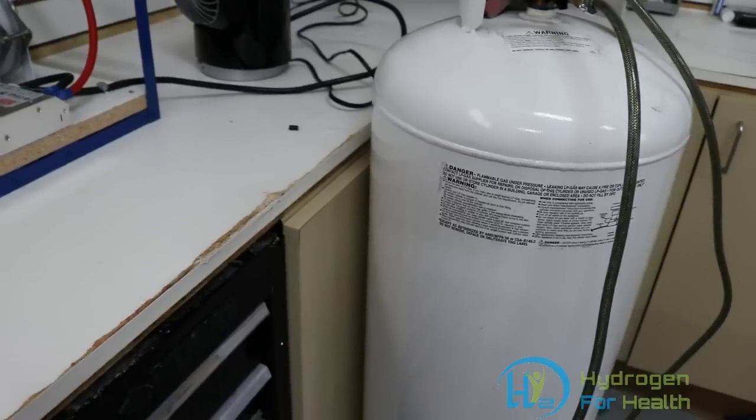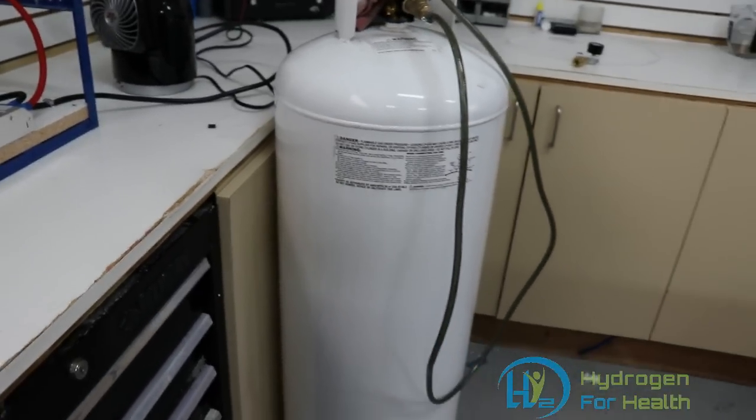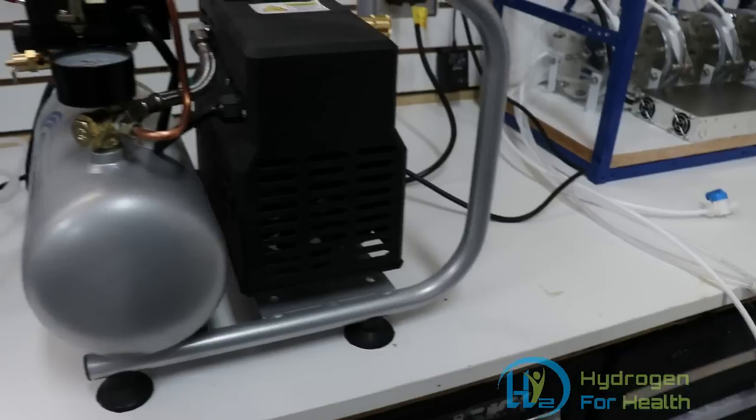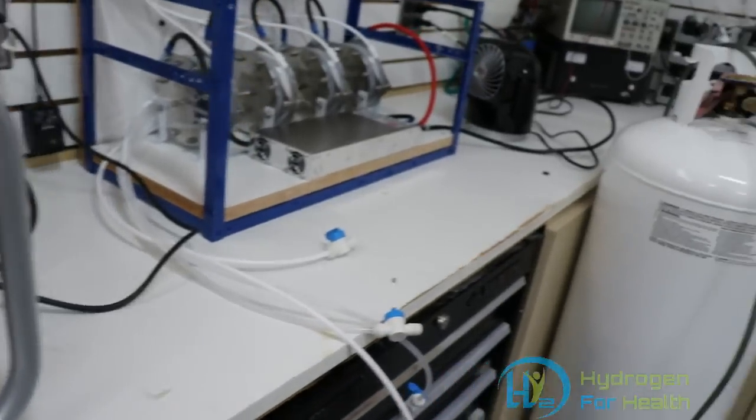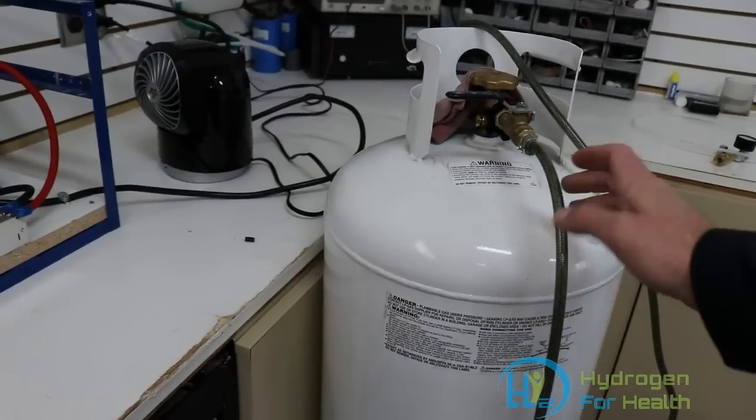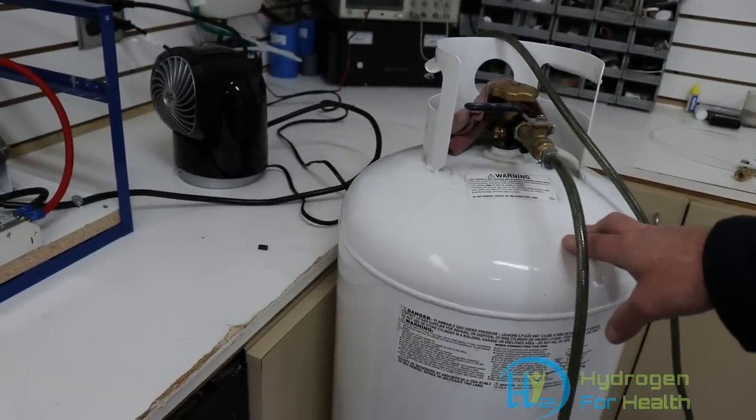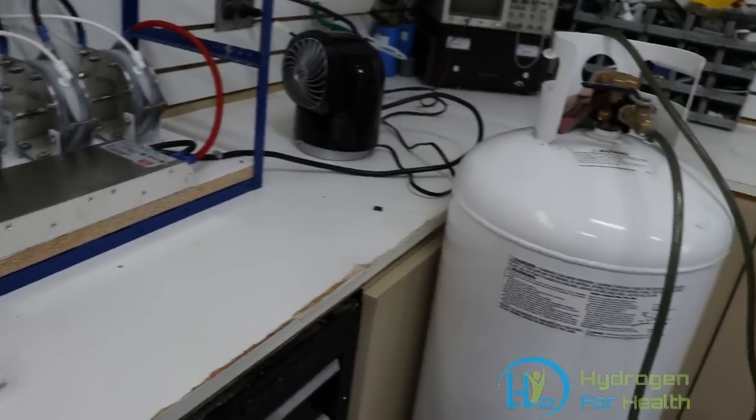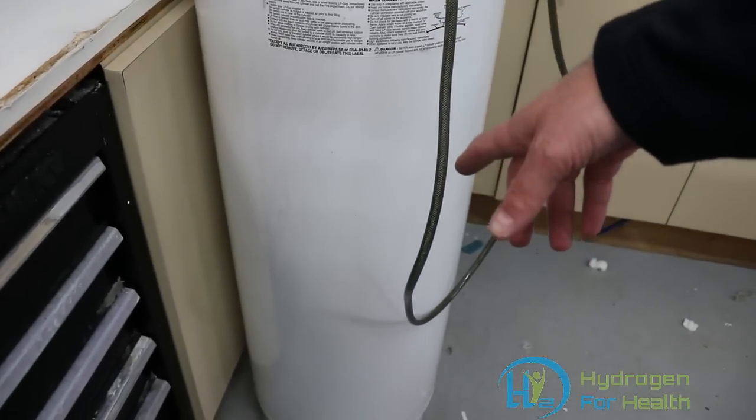So in that video, I'm going to show you how to evacuate the tank and then we'll also do purity tests. But before that, we're going to fill this tank with 20 psi of hydrogen and then we're going to do a purity test on it. See how much impurities we have in the tank still.